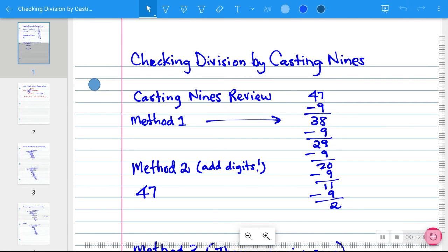Review if you haven't seen my other videos on the process of casting nines. We are going to start with the number 47 and we're going to throw away as many nines out of it as we can. So you can see I subtracted 9 to get 38. Take away another 9, you get 29. Take away another 9, you get 20. Take away another 9, you get 11. Take away another 9, you get 2. And we've finally boiled it down as far as we can. So when you cast all the nines out of 47, you get a remainder of 2.